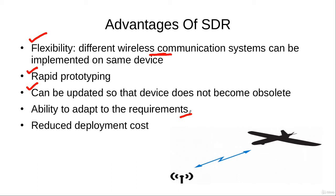We can design different wireless communication systems according to their specific requirements on the same hardware by adapting the software. As a result of all these factors, the overall cost of deployment of wireless communication systems decreases substantially.